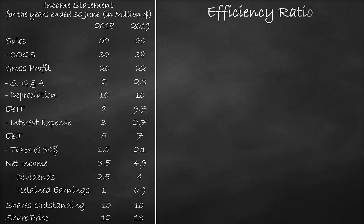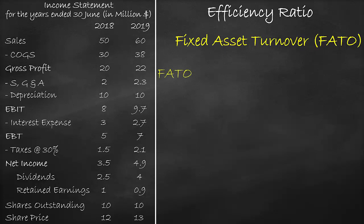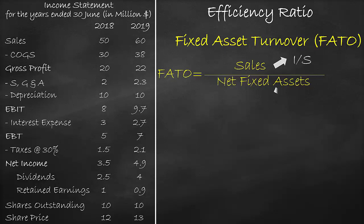An example of the efficiency ratio is the fixed asset turnover ratio. The fixed asset turnover ratio formula is sales divided by net fixed assets. Net fixed assets is the British terminology, whilst the American terminology is plant, property and equipment net. We get the sales from the income statement and we get the net fixed assets from the balance sheet.